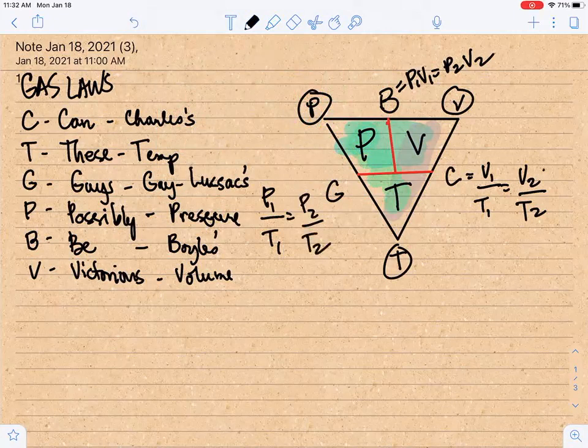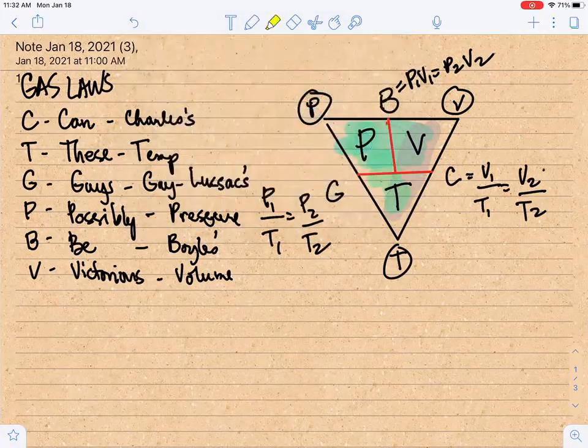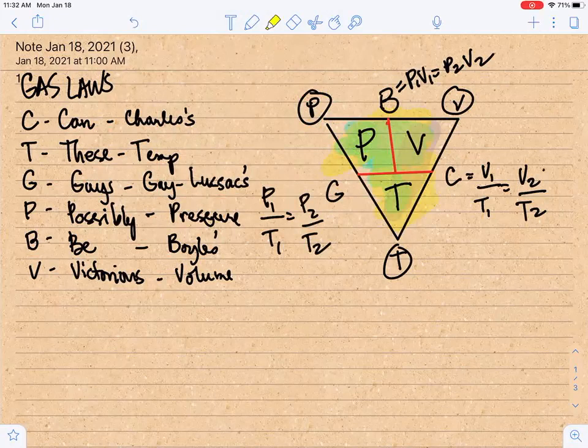And we combine, we combine all these laws. Remember, we had combined all these laws. What do we get? The combined gas law. And we've learned that P1V1 over T1 is equal to P2V2 over T2. So that's it.